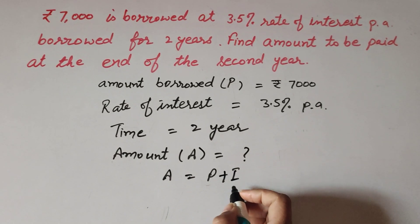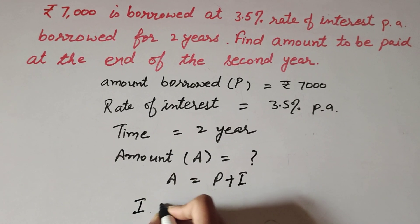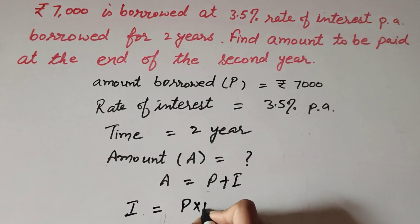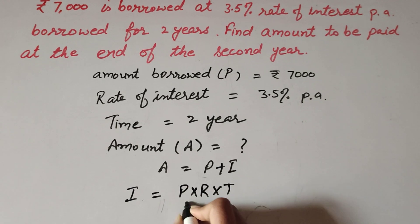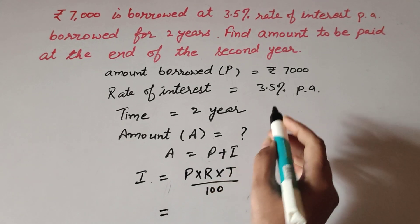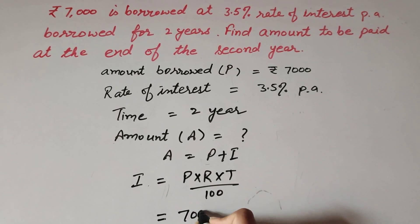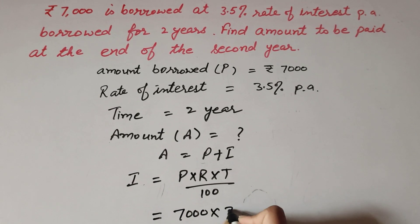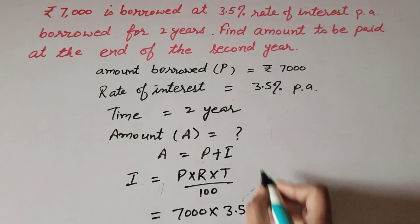The formula to find interest is I = P × R × T / 100. This equals: P (principal) = 7000, R (rate of interest) = 3.5%, T (time) = 2 years, over 100.